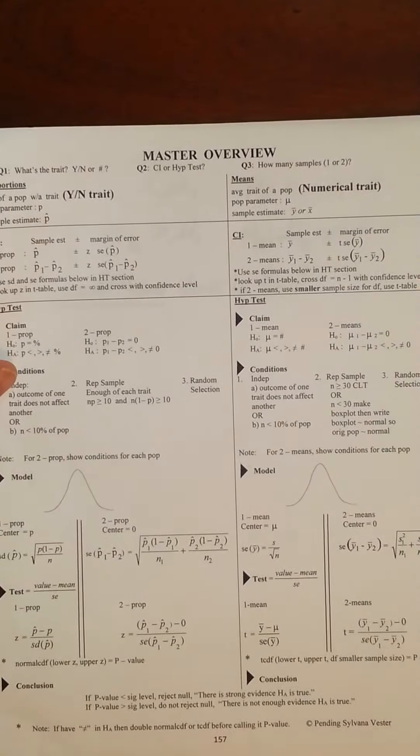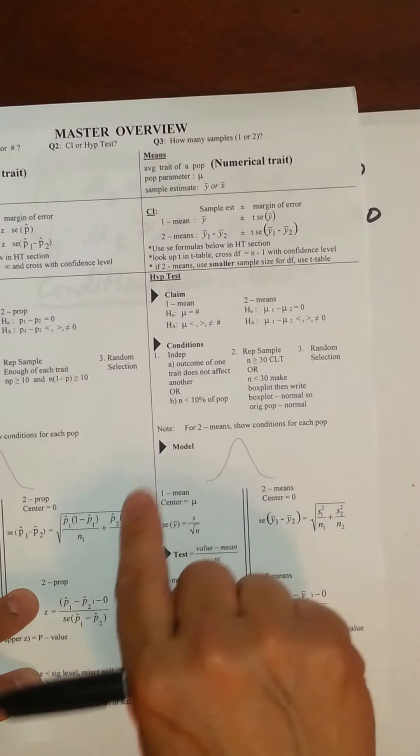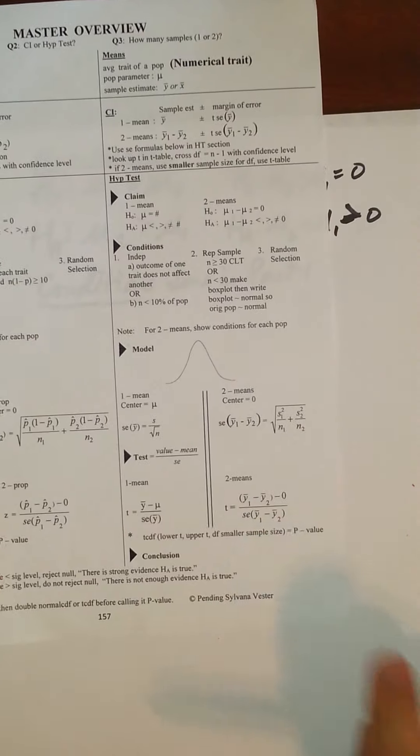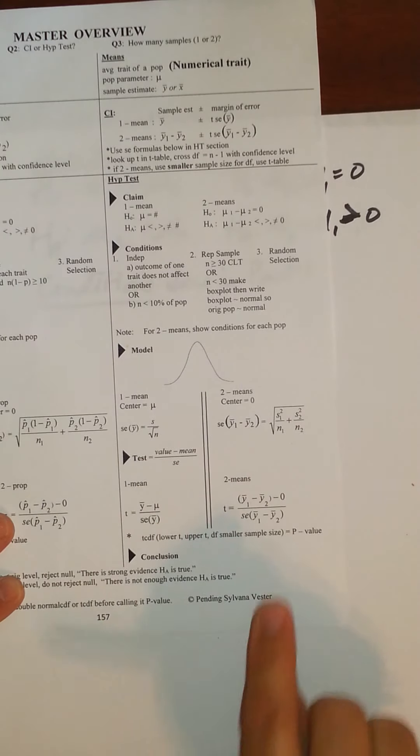So we would make this shape, the center would be zero, and then we'd use our standard error here, which was 1.43, to create the actual distribution, going out three standard errors in both directions. And then we would test this, we would test it, value minus mean over standard error.